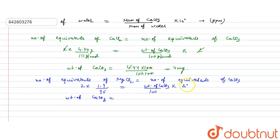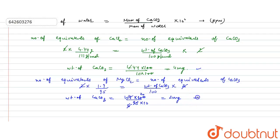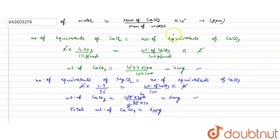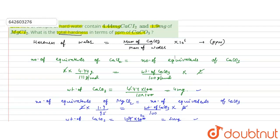The weight of CaCO₃ from MgCl₂ = 1.9 × 100 / 95 = 2 milligrams. So the weight from CaCl₂ is 4 mg and from MgCl₂ is 2 mg. The total mass of calcium carbonate is therefore 6 milligrams.